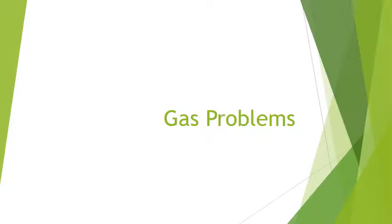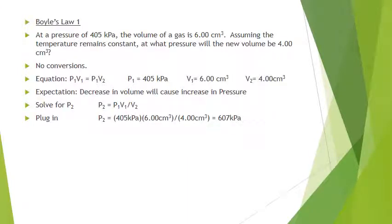We're going to go over each of the gas laws. First is Boyle's Law. We have a pressure of 405 kPa and a volume of six centimeters cubed. We assume temperature and number of particles are constant. The question is: what is the new pressure when the volume changes to four cubic centimeters? Remember, if you decrease the volume, the pressure should go up. No unit conversions are needed here unless told. Boyle's Law is P1V1 = P2V2.